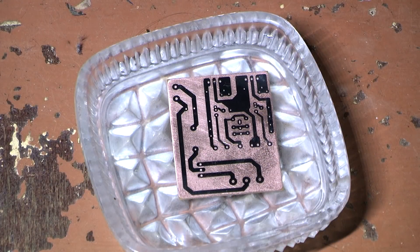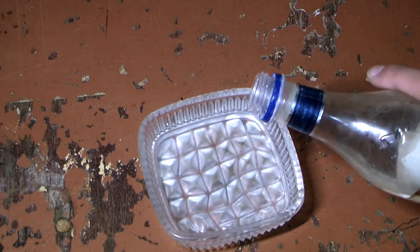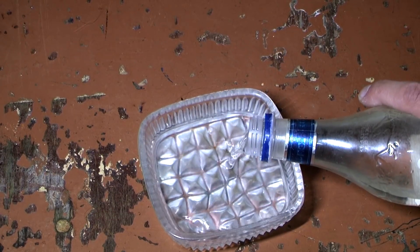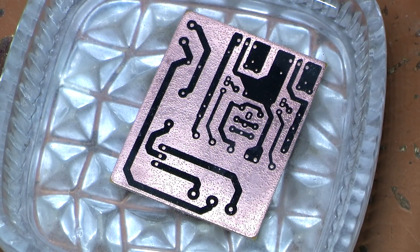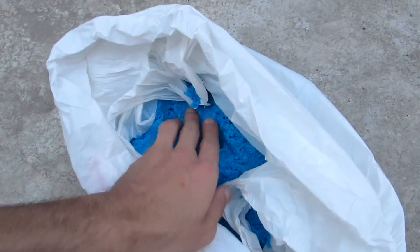Then the board can be etched. There are a lot of ways, traditional and exotic. I use two main methods, citric acid with hydrogen peroxide or copper sulfate.